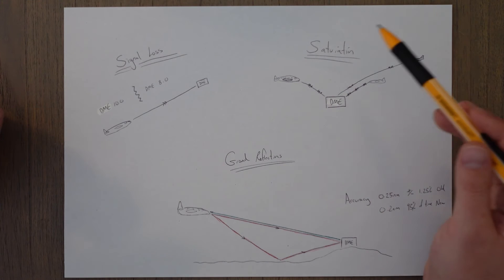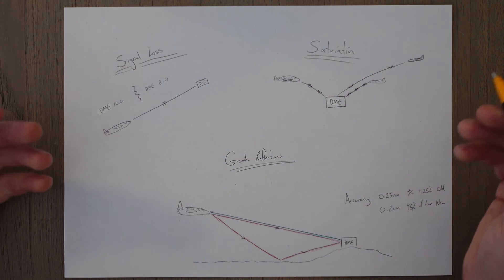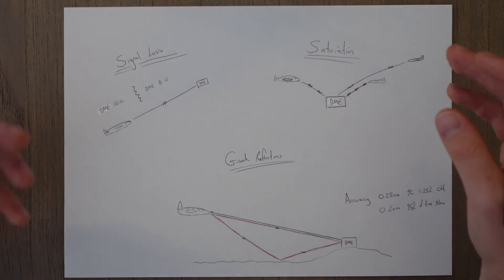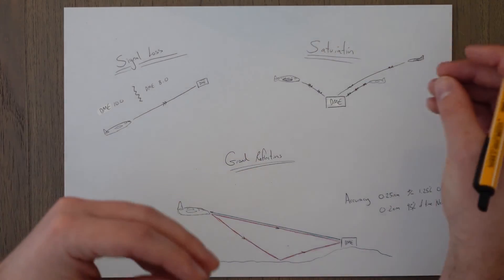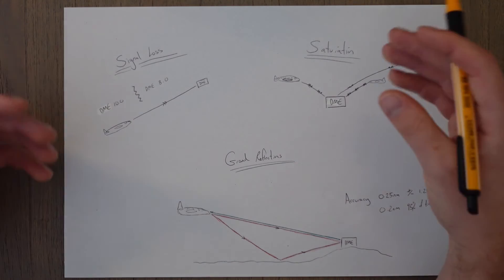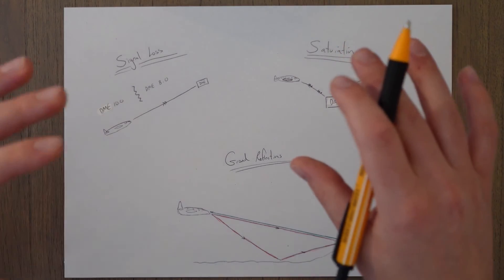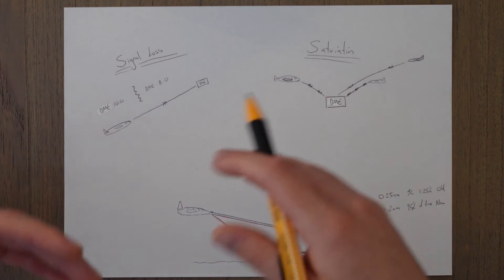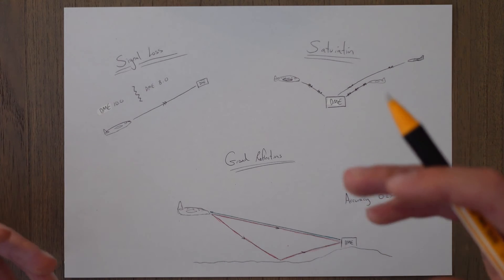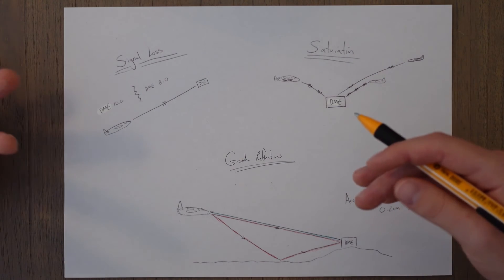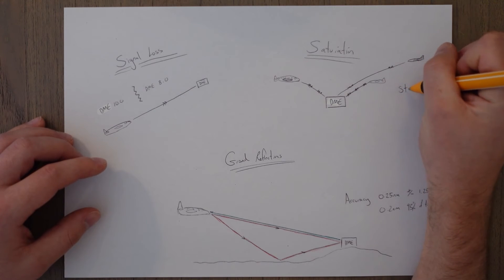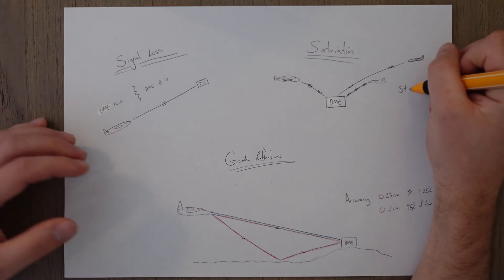Another error is saturation, where a DME station becomes overwhelmed with lots of aircraft interrogating. This means many aircraft would not receive the correct pulse pairs back. DME stations have an automatic shedding system that disregards signals that aren't as strong — perhaps they're too far away or from a weak transmitter. In practice, only the strongest 100 signals receive replies and distance information.